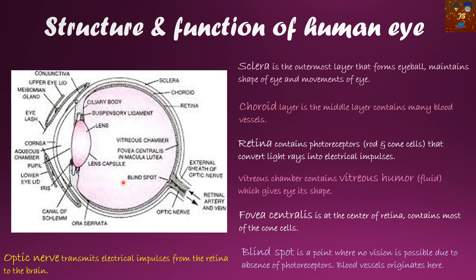Next comes the vitreous chamber, which is filled by a fluid called the vitreous humor that gives the eye its shape. Next comes the fovea centralis — a small bulge at the center of the retina that contains most of the cone cells. Then there is the blind spot, a point where no vision is possible due to the absence of photoreceptors. The optic nerve transmits electrical impulses from the retina to the brain.